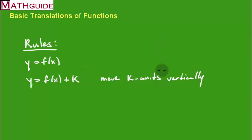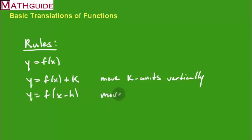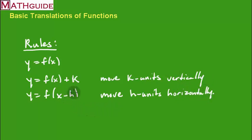So if k is positive, it'll move up k units; if k is negative, it'll move down k units. Now, what if we took the function and replaced x with x minus h? This is actually going to move the graph h units horizontally. If it's x minus 3, it moves three units to the right. If it's x plus 1, it moves one unit to the left — always the opposite. That's why I'm using h and not negative h.